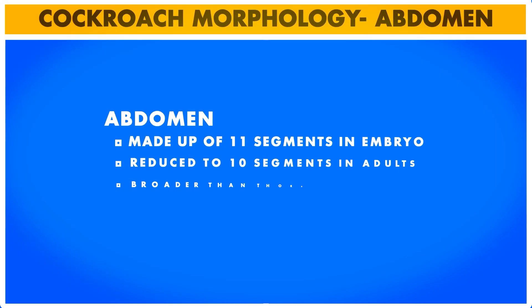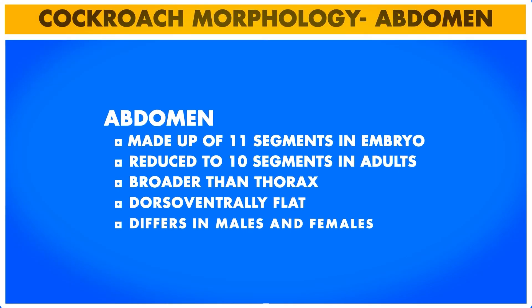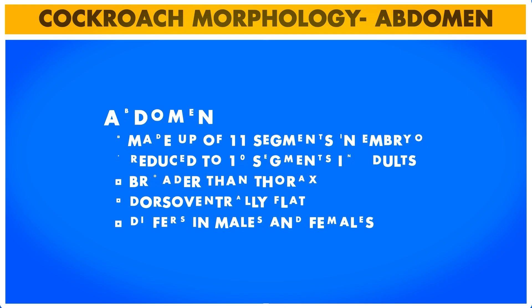The abdomen is made up of 11 segments in the embryo but in adults it is reduced to 10 segments. The abdominal part is broader than the thorax and dorso-ventrally flat. The abdomen differs in males and females.